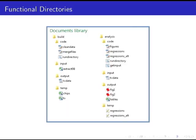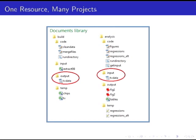A more natural style is to split directories into functional groups — for example, one directory that builds the data and one that analyzes it. Now you can see immediately that chips.csv and tv.csv are temporary files used in building tvdata.dta, which is the only input into regression analysis. Another benefit: you can use the same resource, tvdata.dta, for multiple projects. If you want to write another analysis directory for tortilla chips instead of potato chips, you can call the same built resource.